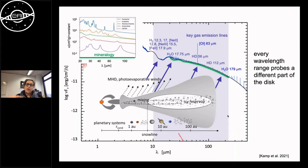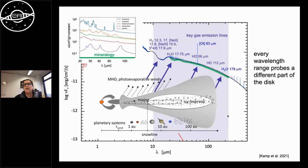To understand how these disks look in reality, we cannot use just one observing facility, because conditions range from extremely warm and dense in the inner disk to very dilute and extremely cold in the outer parts. Any gas distributed in the disk radiates in completely different wavelength ranges depending on location. In the outer disk we see rotational lines of carbon monoxide and water, visible in the spectrum as distinct features.